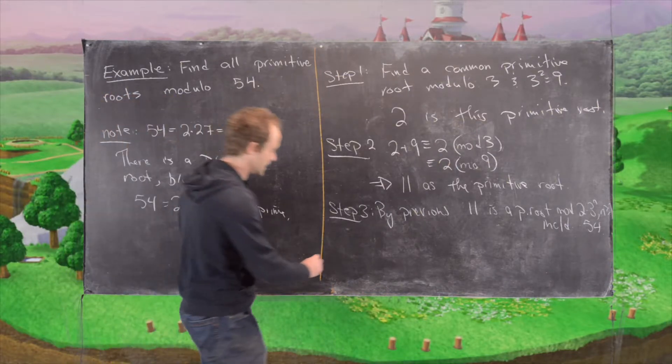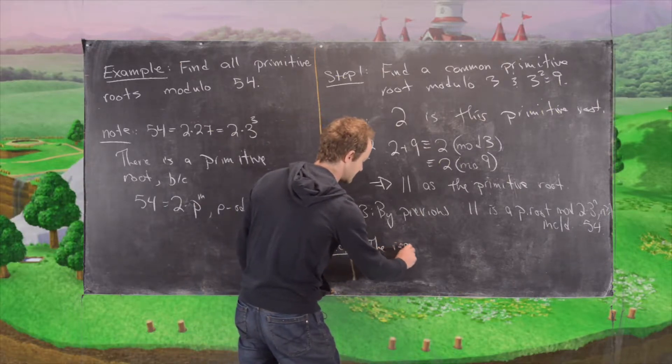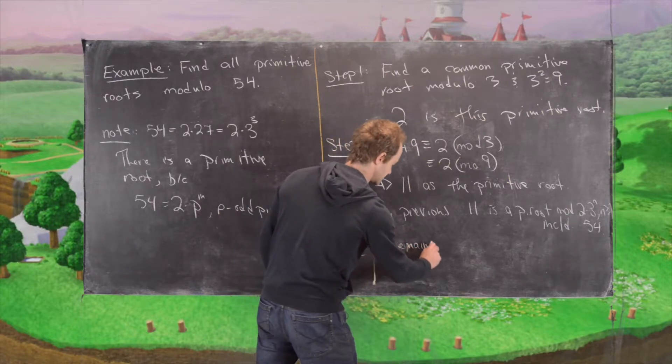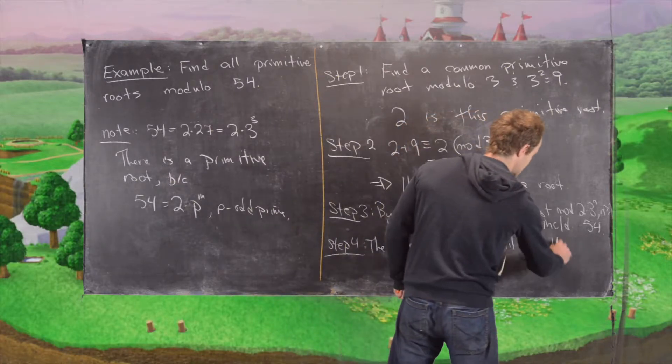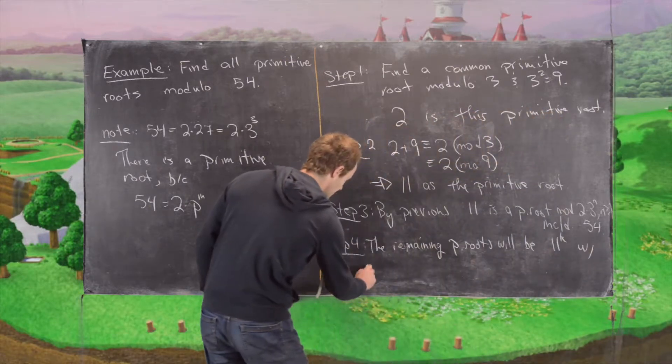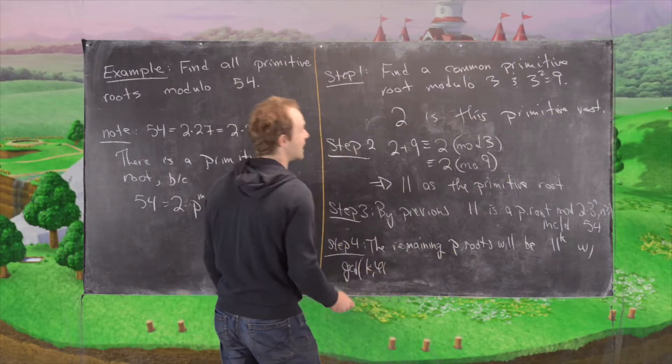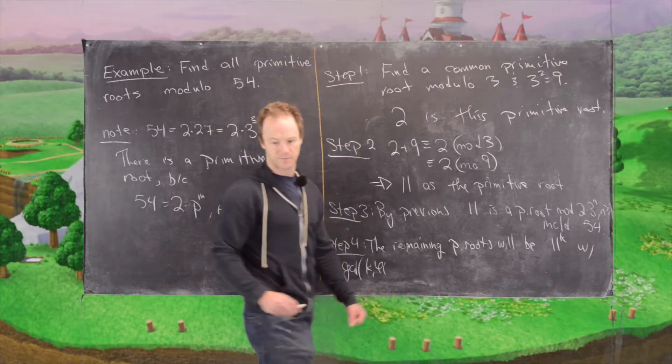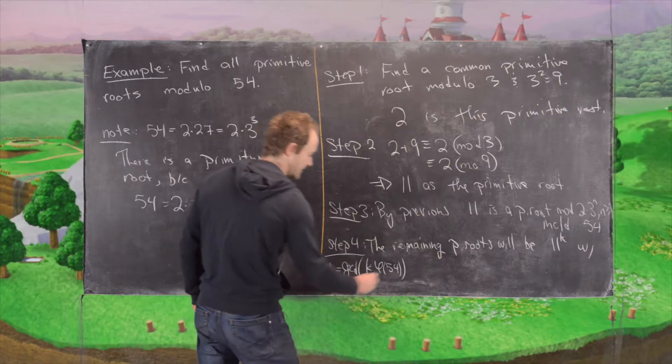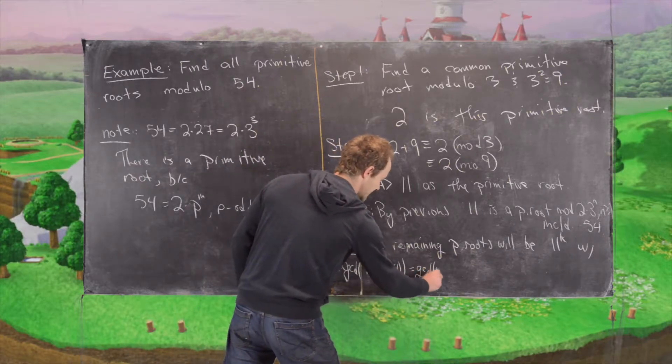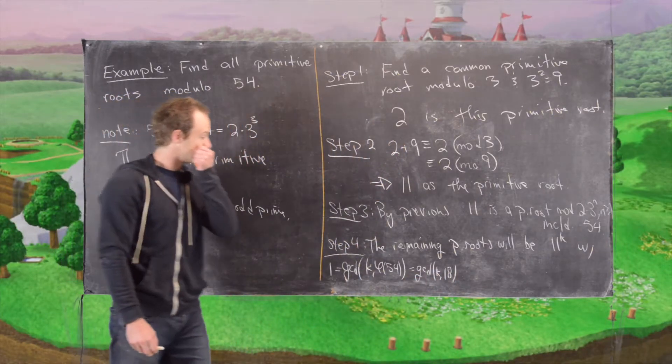So now the next step is the following to find the rest of the primitive roots. So the remaining primitive roots will be 11 to the k, where the GCD of k and phi of 54 equals 1, but that's the same thing as the GCD of k and 18. You can check that phi of 54 is equal to 18.